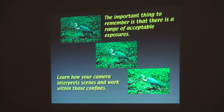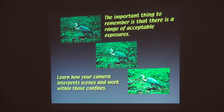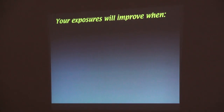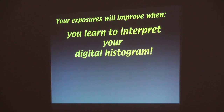You need to know what your camera is capable of doing. If it's consistently giving you images that are too bright or too dark, you need to know that it's consistently going to do that. You need to look at your histogram, learn to interpret your digital histogram, and more importantly, learn how to adjust it.